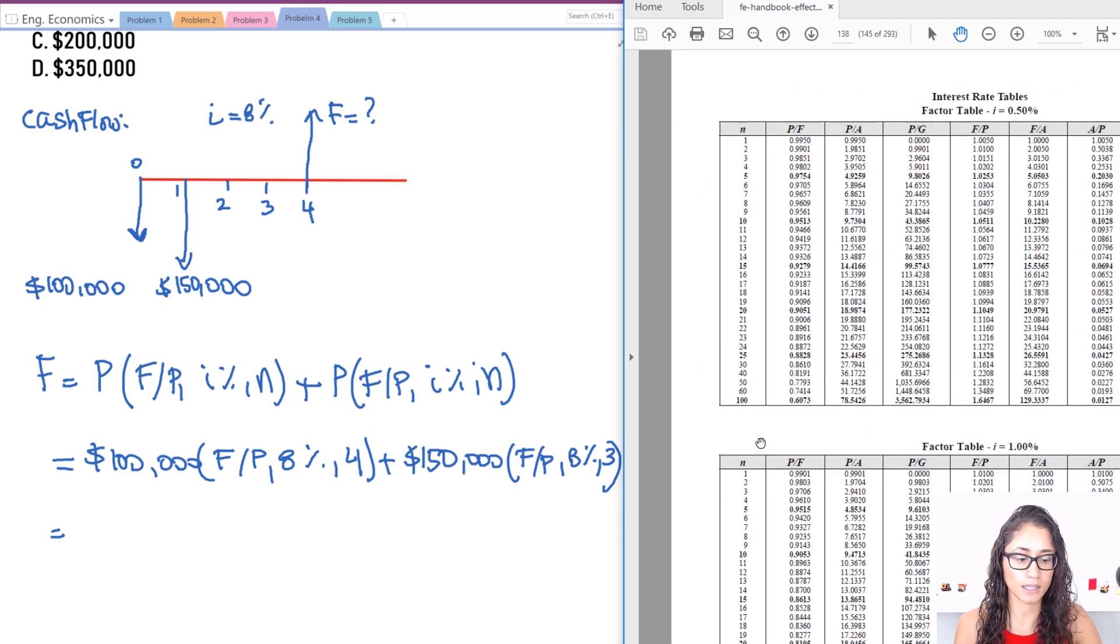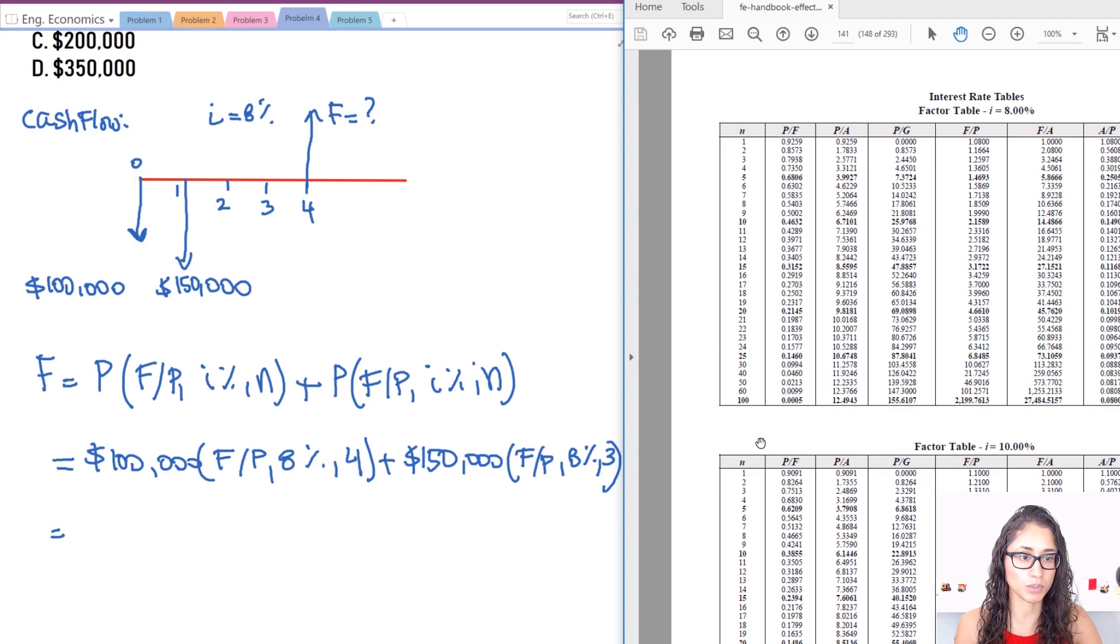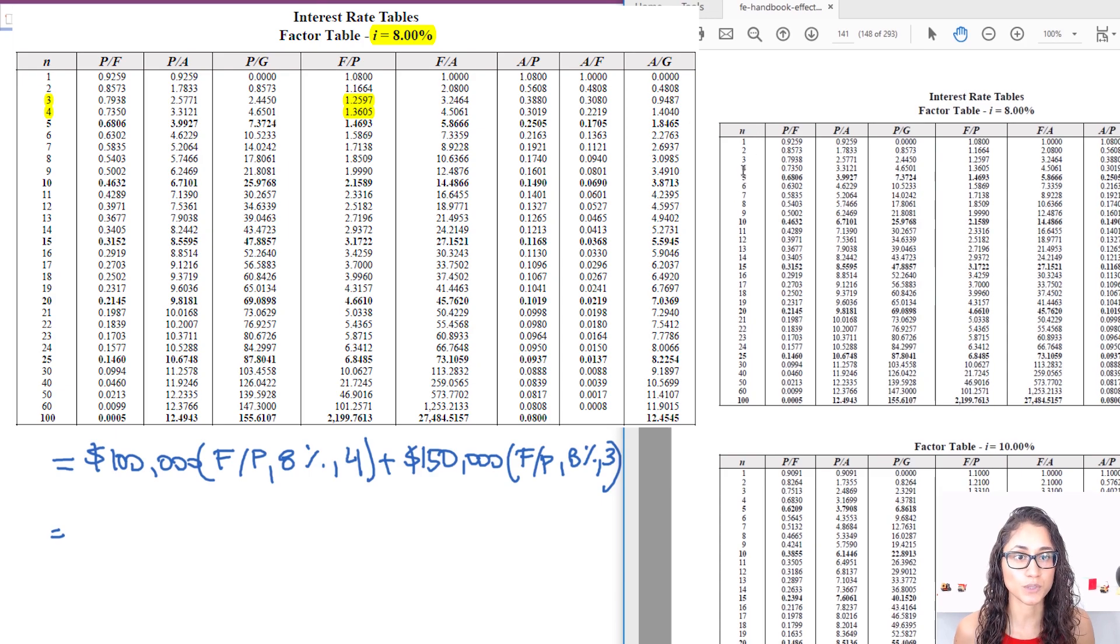So we have i is 8 percent, so we're going to keep going. So that's on page 141. We have i is equal to 8 percent, and number of years we need 3 and 4, and we are looking for F to P. So this is your F to P. So let's write it down.